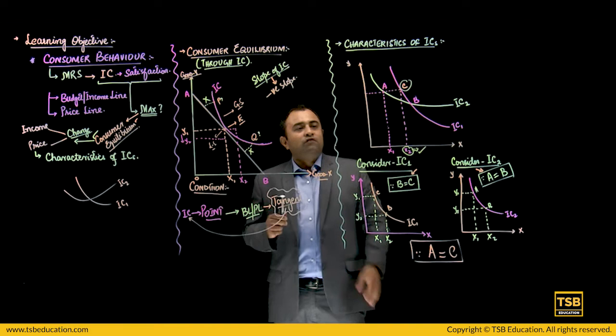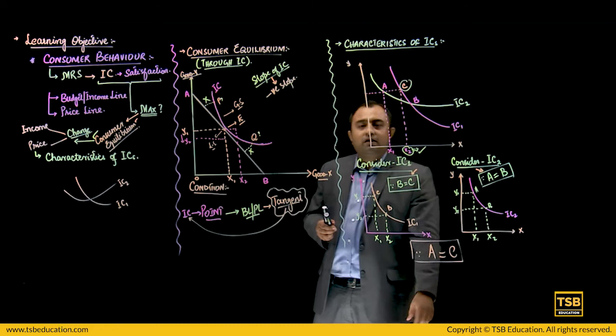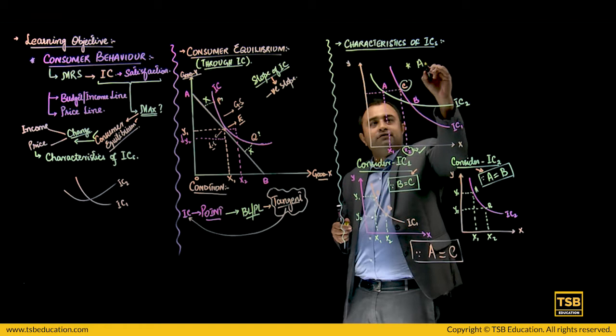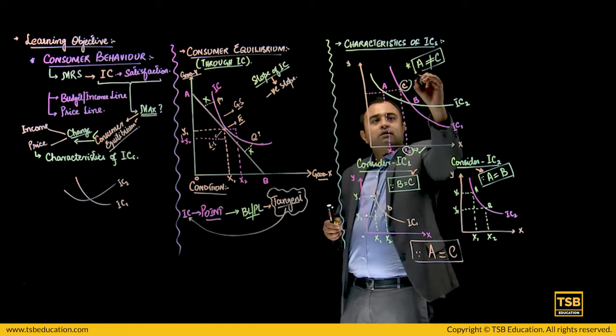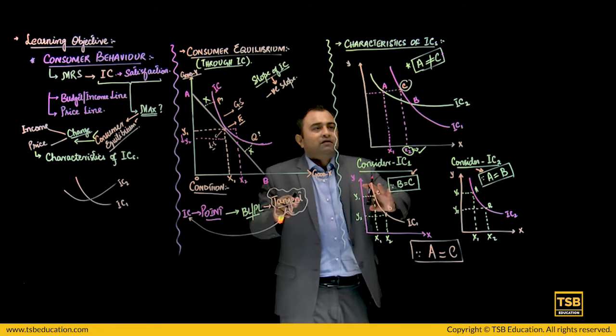तो इस case में इस बड़ी वाली तस्वीर को देखो, तो क्या यह चीज proof हो रही है? यहां पे a is not equal to c है. तो आपने देखा, यहां पे consumer point c पे आके ही अपनी final consumption करेगा, जो कि उसको ज्यादा satisfaction देगा. So in this case हम कहेंगे कि a is not equal to c.